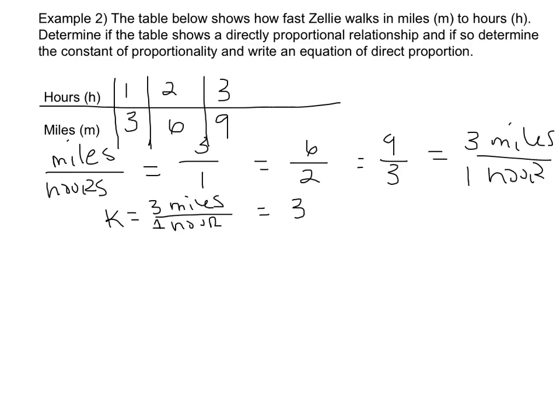Now I need to write my equation of direct proportion, which is fairly easy. I'm going to write M, my dependent variable, equals 3H. 3 times the number of hours she walks equals the total miles walked.